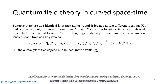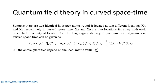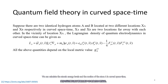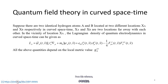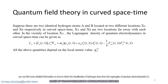This is the electron's mass, electron's charge, and the rest are the electromagnetic vector potential fields. All the above quantities depend on the local metric value GA. From this Lagrangian LA, we can basically describe all the physical phenomena occurring at the location of hydrogen atom A, and we can calculate the atomic energy levels and motion of atom A in curved spacetime. You can find detailed information on how to derive the Hamiltonian of a hydrogen atom from the Lagrangian density of quantum electrodynamics in the referenced material.